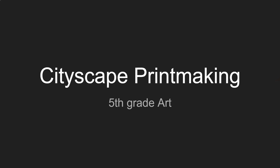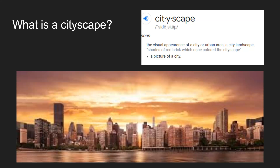Fifth grade, for your project this cycle you are going to be starting a cityscape printmaking project. First, what is a cityscape? A cityscape is the visual appearance of a city or urban area — a city landscape. It is also considered a picture of a city. You can see I put a nice panoramic picture of a city down below. So let's take a look at some more examples.